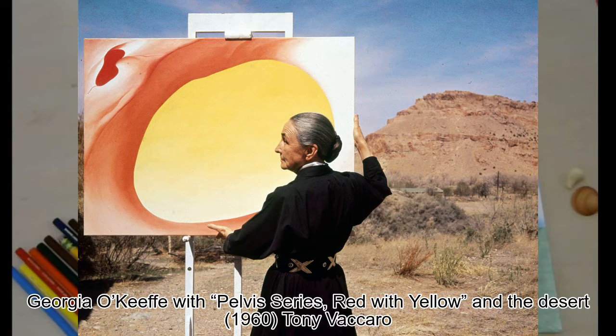She often took what she saw around her and simplified it, making it much bigger than it would be in real life. When she painted a flower or a shell or a bone that she found in the desert, it would take up as much space in her painting as a skyscraper. She said that nobody really sees small things, so she would paint them big and surprise people into looking at them.